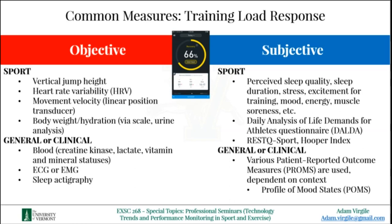Subjective measures for training load response include various perceptions and well-being items relating to stress, energy, mood, sleep, and muscle soreness. There are many validated well-being questionnaires for use with athletes. There are also observer-reported measures — similar to what happens when you visit your doctor and they ask you a series of questions — and in general and clinical settings, a lot of observer-rated metrics are collected to assess training responses.